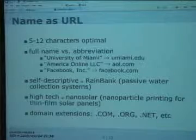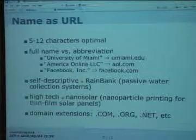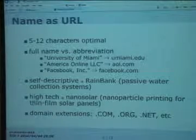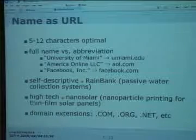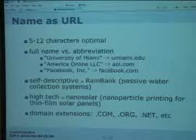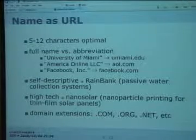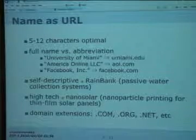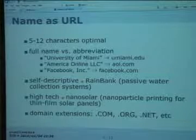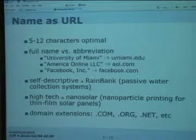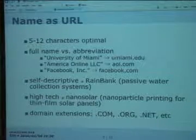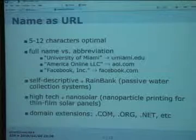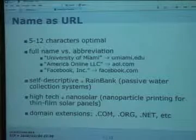A participant asks: if you have a choice between keeping the full business name or shortening it for .com purposes, what's better? The answer: if the full name is more than twelve characters, or four words run together, it may be difficult for people to remember. The URL is increasingly critical — you don't want people fumbling around. The shorter, more discreet, and more unique you can make it while avoiding the pitfalls discussed, the better.